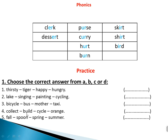Number four: collect, build, cycle, orange. All of them are verbs except 'orange'. You can replace it with 'play' or 'sing'.